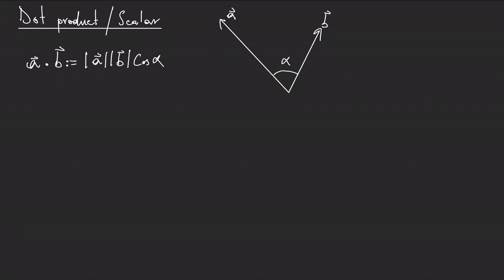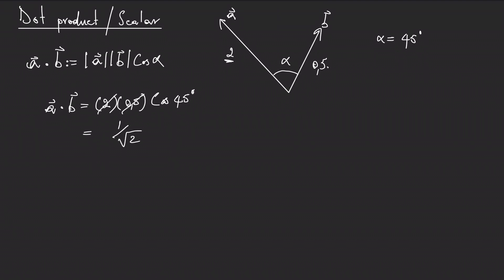Let's use an example. Suppose the magnitude of vector A is two units, the magnitude of vector B is 0.5, and the angle between them, alpha, is 45 degrees. Then the dot product A·B is simply the magnitude of A, which is 2, multiplied by the magnitude of B, which is 0.5, times cosine of 45. Cosine of 45 is one over root two, so the twos cancel and we end up with one over root two. That is the dot product of these two specific vectors.